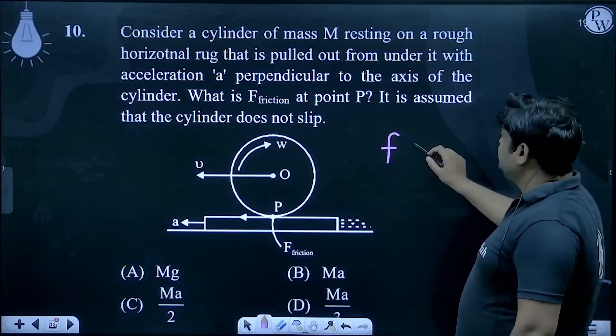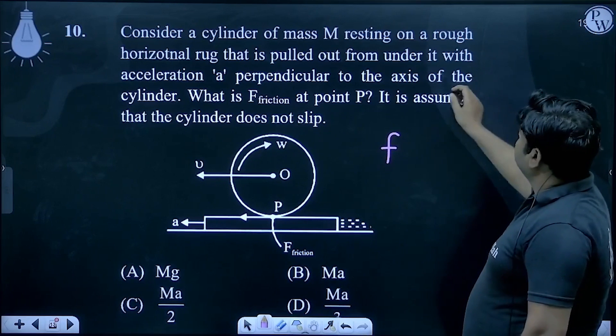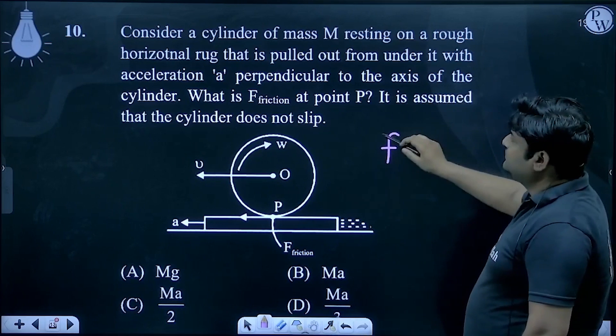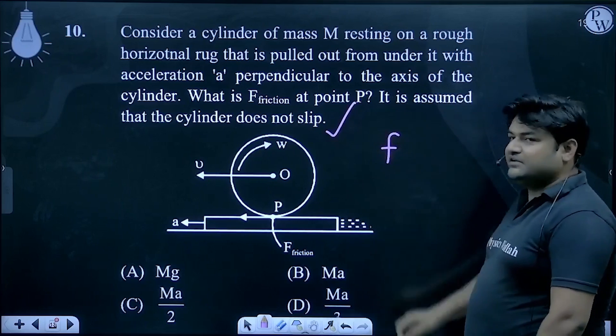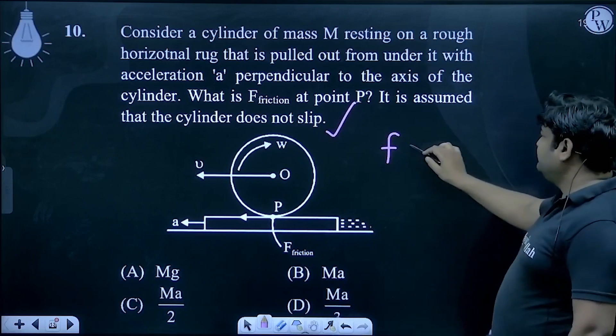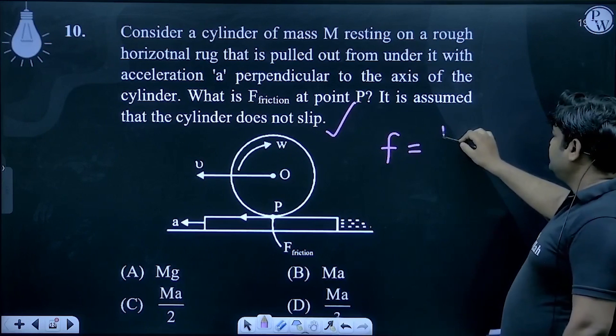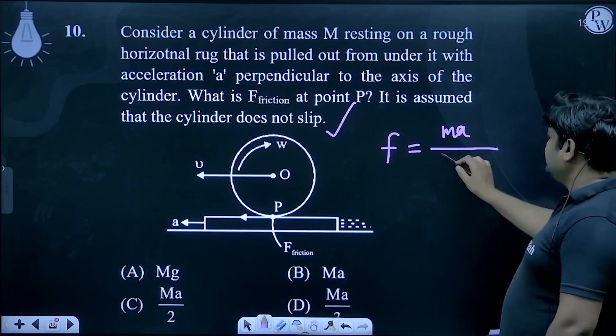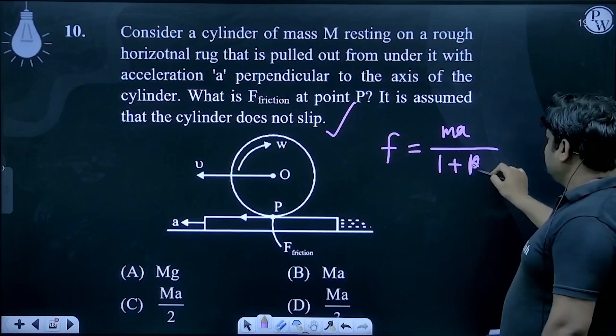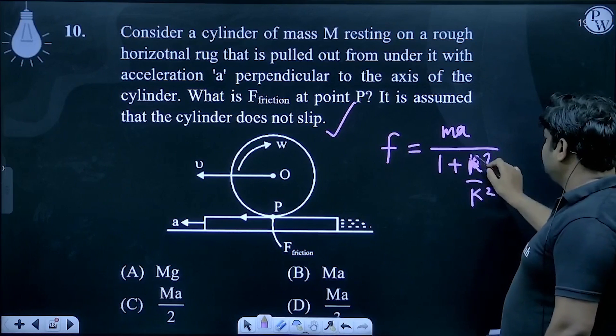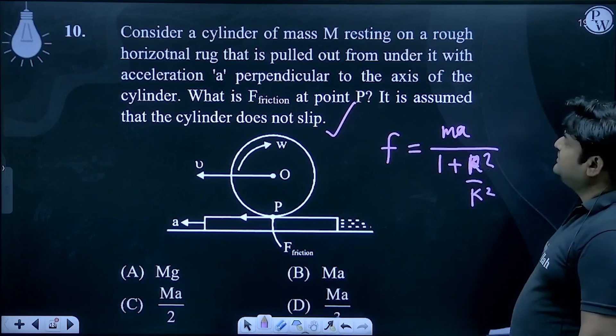General formula rolling is not slip. If we don't do it, then friction is not to do it. So, friction is minimum condition that this M into acceleration divided by 1 plus R square by K square. So, solid cylinder is.